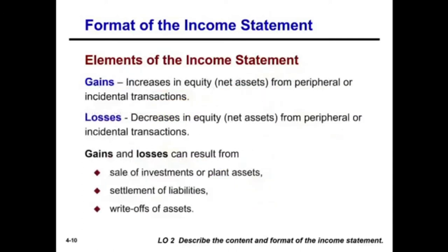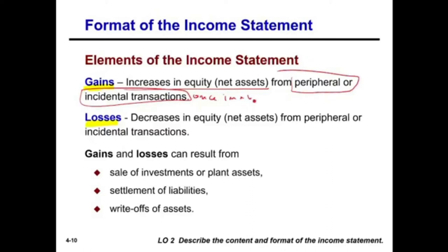Another two items that affect the income statement are gains and losses. Gains are increases in net assets or increases in equity from peripheral or incidental things that happen once in a while. A gain has nothing to do with your ongoing operation. Nothing to do with the ongoing or central operation — because if it has something to do with ongoing or central operation, then it's revenue.